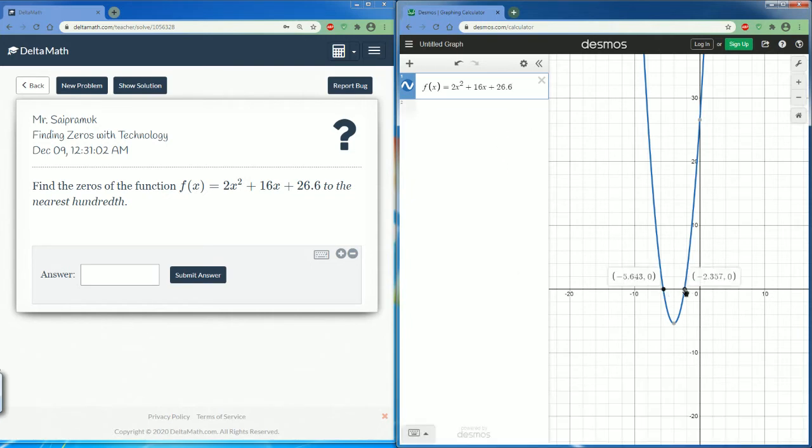So our two points are going to be here. Negative 5.643. Now I need to give you the other answer. So I press a comma on my keyboard. Pressing the comma allows me to enter a new answer. Negative 2.357.